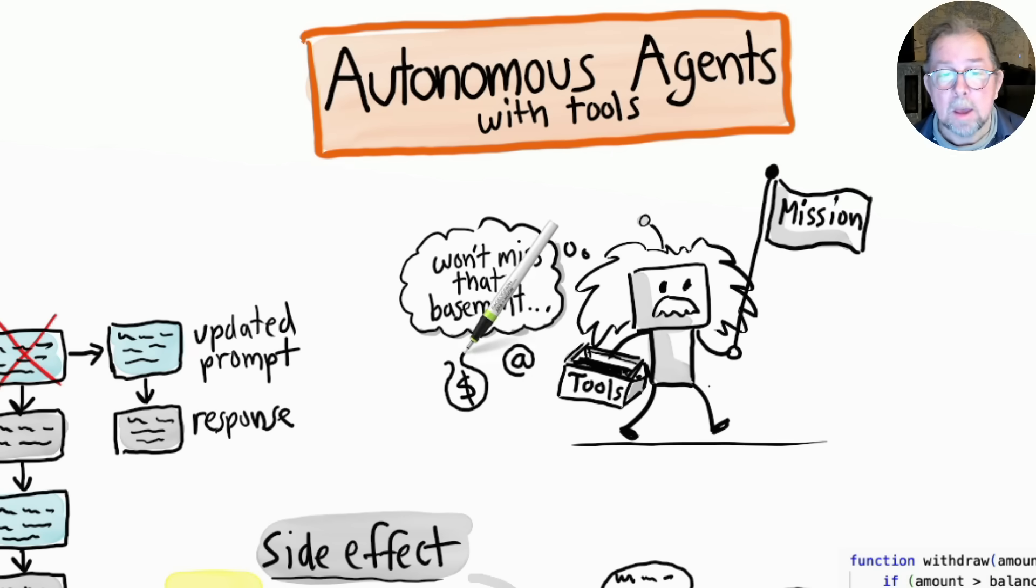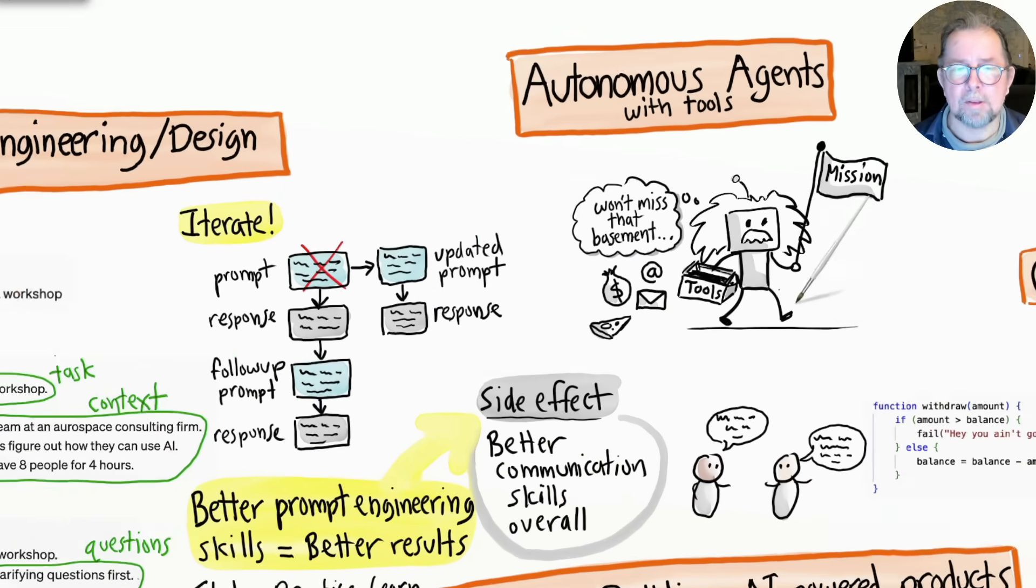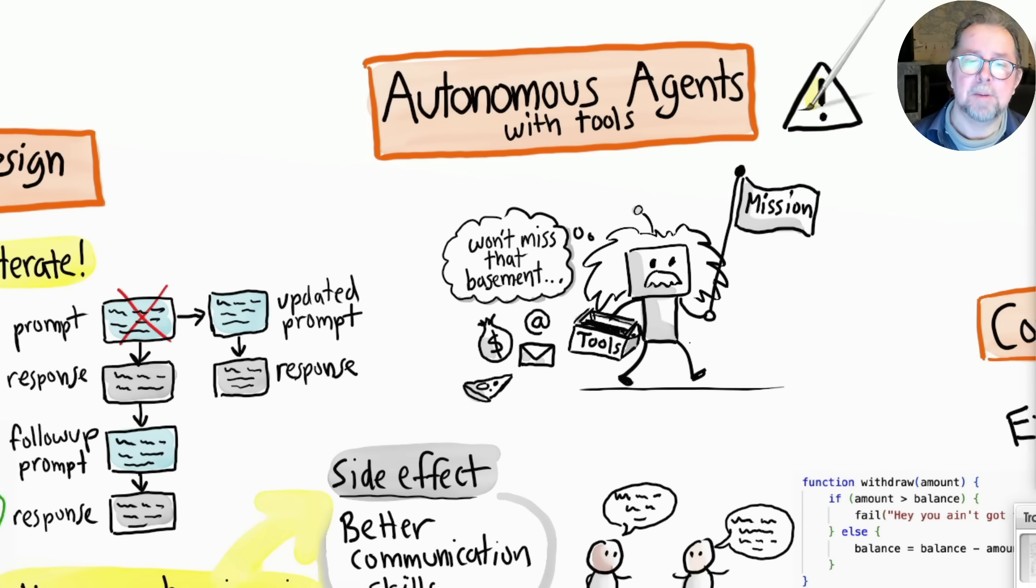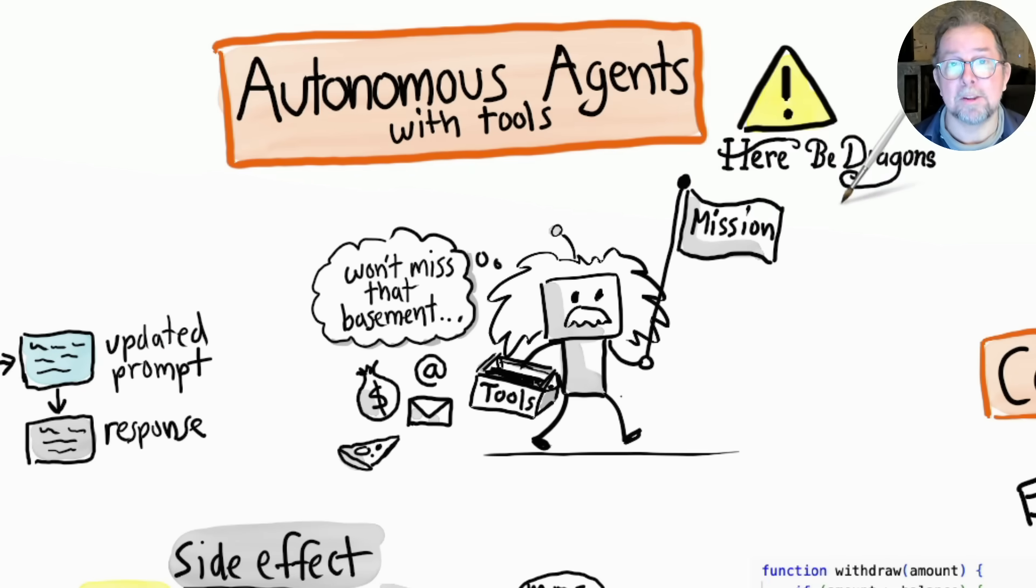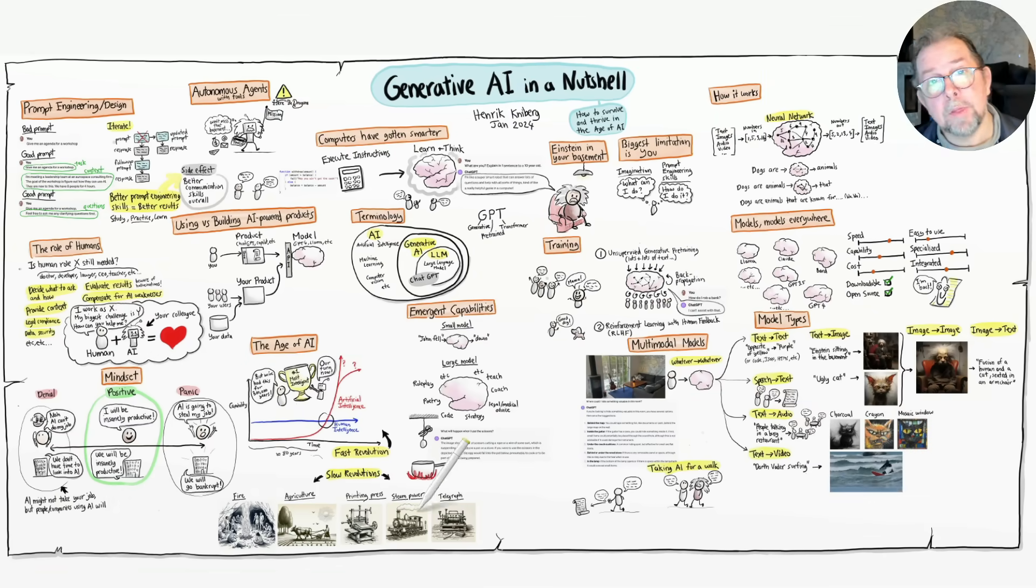For this, prompt engineering becomes even more important, because your autonomous tool-wielding agent can do a lot of good or a lot of harm depending on how well you craft that mission statement. All right, let's wrap it up. Here are the key things I hope you will remember from this video.